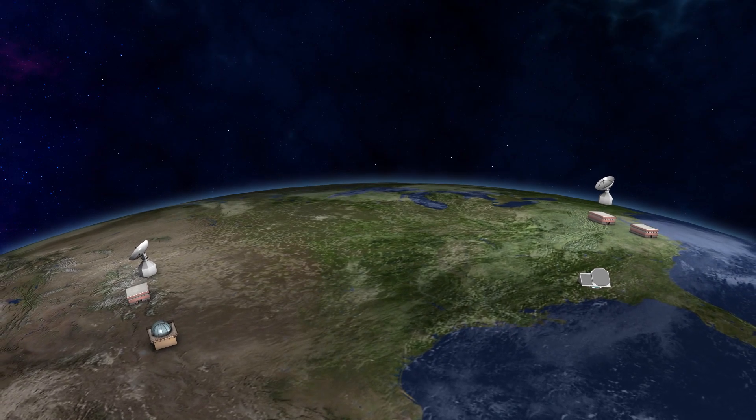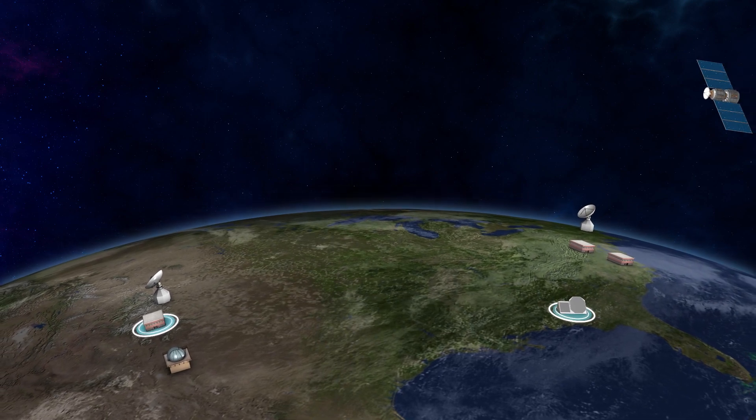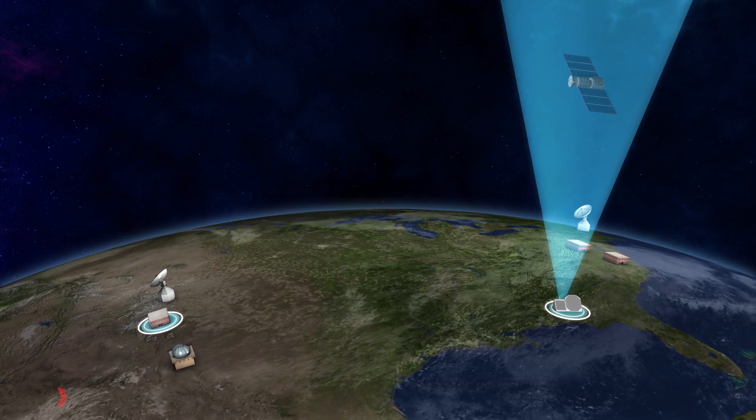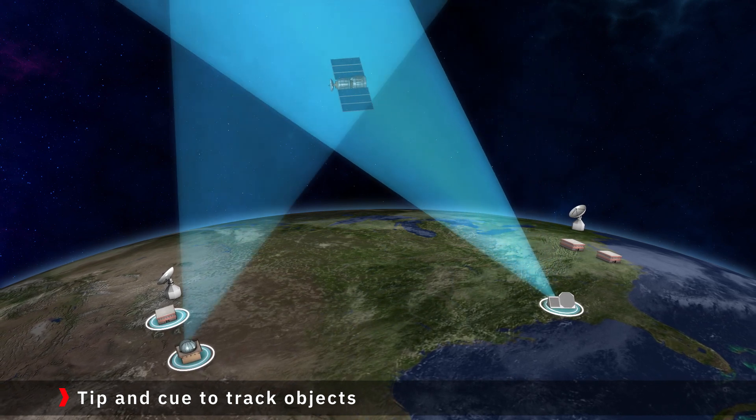Spectre provides a unique platform for multiple sensors to achieve an optimal network. One sensor can detect an object, then tip and cue, or task another sensor to help track that object.